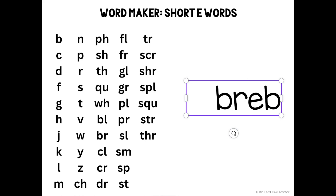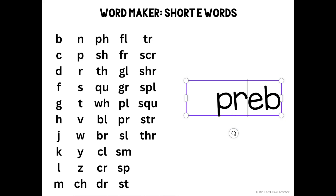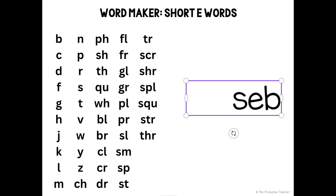Bleb is not a word. Breb is not a word. Cleb is not a word. Creb is not a word. Dreb is not a word. Fleb is not a word. Freb is not a word. Gleb is not a word. Greb is not a word. Pleb is not a word. Preb is not a word. Sleb is not a word. Smeb is not a word. Speb is not a word. Steb is not a word. Treb is not a word. Screb is not a word. Shreb is not a word. Spleb is not a word. Squeb is not a word. Streb is not a word. Threbb is not a word.